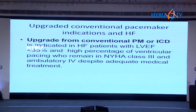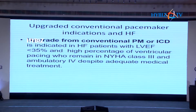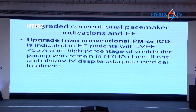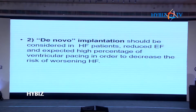Consider a patient who has had a prior pacemaker with an EF of 50 percent at implant, which has come down to around 35 percent during a box change. When the generator needs to be changed and the EF has dropped to 35 percent or less, it's prudent to consider an upgrade of the device to a CRT if the patient is symptomatic.